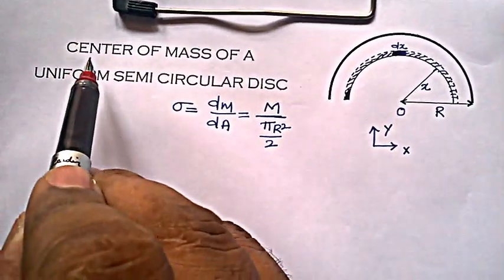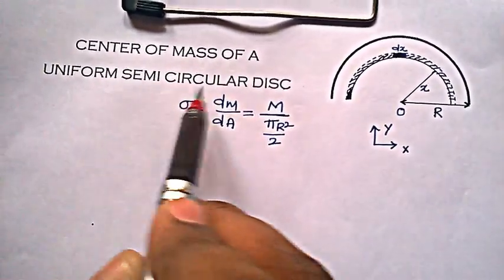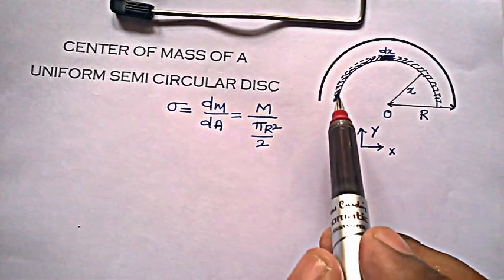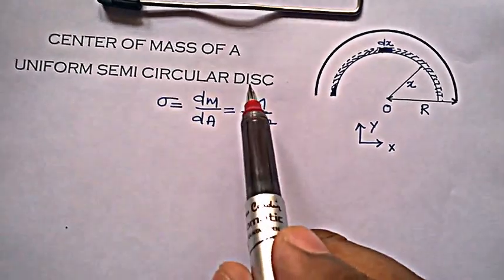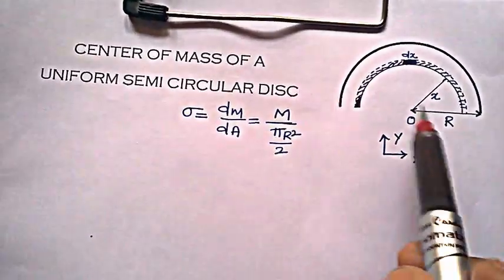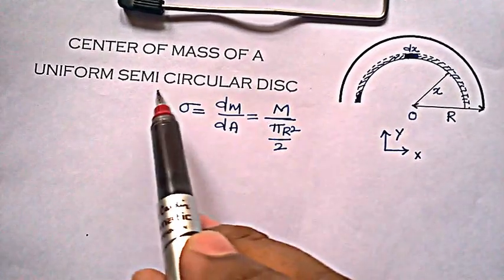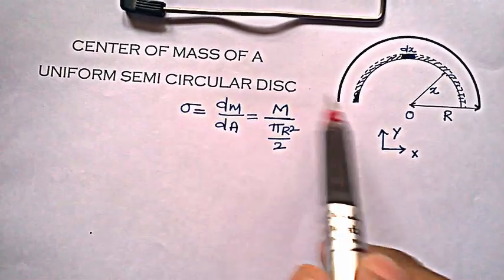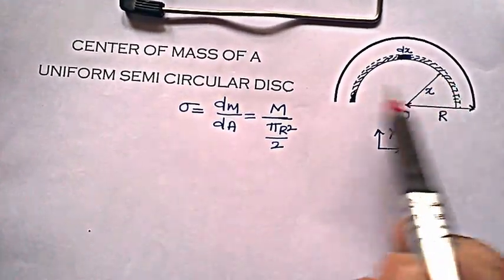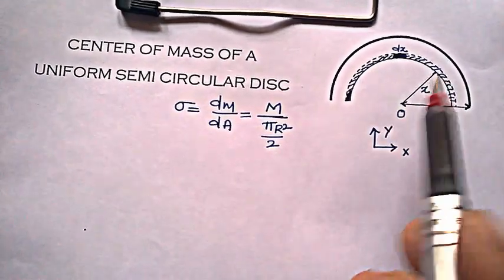Hello guys, welcome to the video on how to find out the center of mass of a uniform semicircular disc. In my previous video I told you how to find out the center of mass of a circular disc, which lies at the center. Now this is a semicircular disc, so let's see where the center of mass of this figure lies.